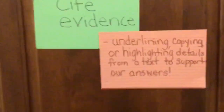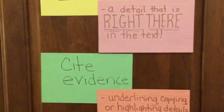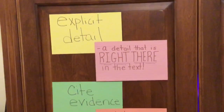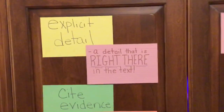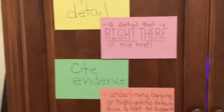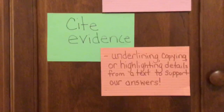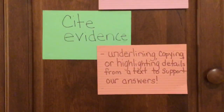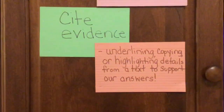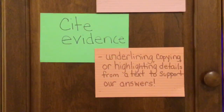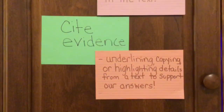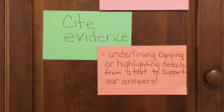Here is some vocabulary that should help you. If you are in my homeroom, you have seen these cards before. An explicit detail is a detail that is right there in the text. Citing evidence means to underline, copy, or highlight details from a text to support our answers. In this case, you'll just need to copy it down because you can see the text, but you don't have it in front of you to underline or highlight.